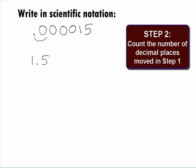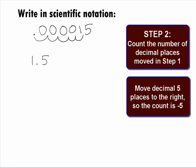In Step 2, we need to count the number of decimal places moved in Step 1. How many decimal places did we end up moving and in what direction? It looks like we moved the decimal 5 places to the right to go from .00015 to 1.5, so our count is negative 5.